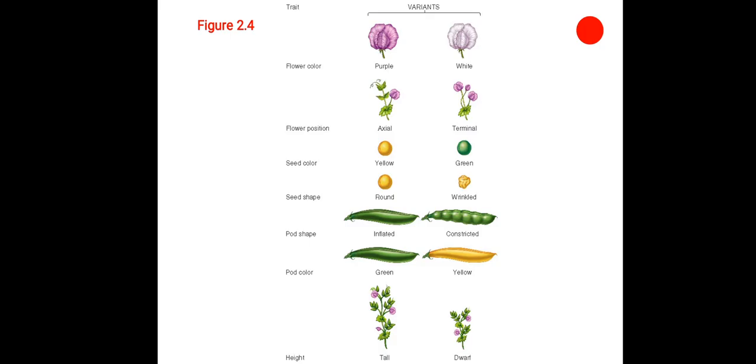The left-hand side row is considered to be the dominant variants or traits, as they can express themselves in the next generation. However, the right-hand side row of the variants are considered to be the recessive traits, as they can't be expressed in the next generation.